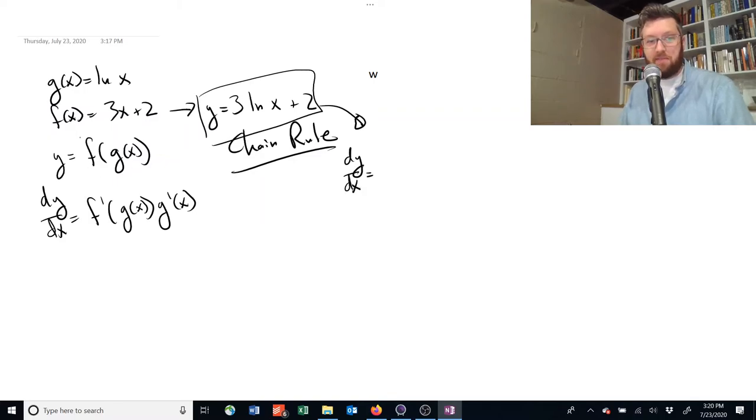The derivative of this outer term f is 3, and then we would multiply that by the natural log of g, and then we would multiply all of that by... the natural log inside... I'm sorry, I almost forgot.